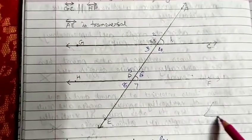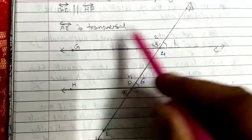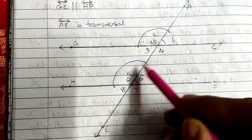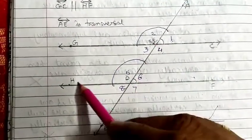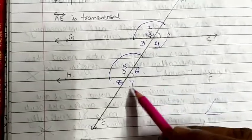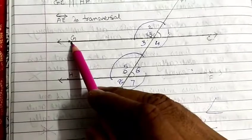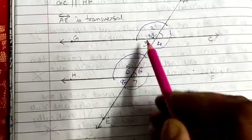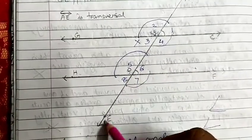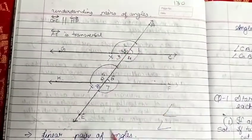The corresponding angles go in the same direction. The corresponding angle of ABG is BDH. The corresponding angle of CBD is FDE. Similarly, GBD corresponds to HDE. In all, there are four pairs of corresponding angles.